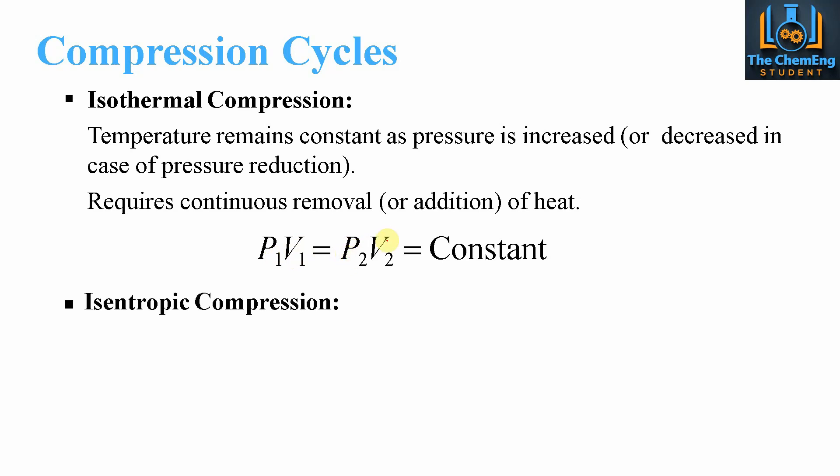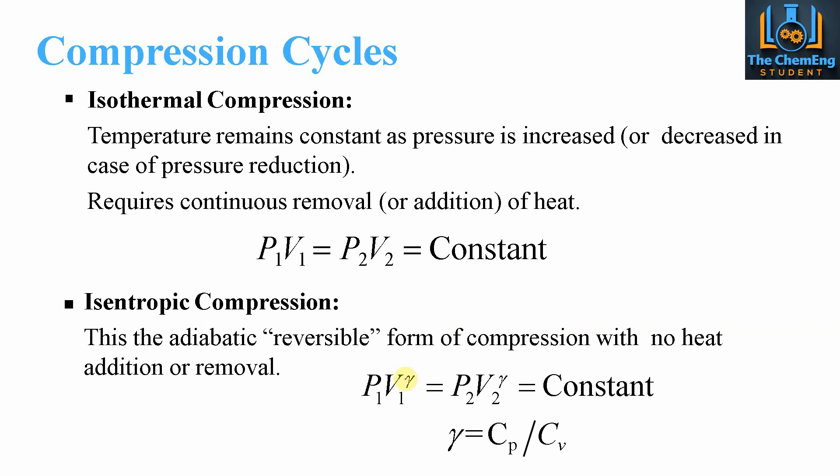Now the other type of compression is known as isentropic. Now isentropic compression is the adiabatic or reversible form of the compression with no addition of heat or removal. So it follows the same principle, but because we don't have the addition or removal of heat and the system is reversible, we then introduce this new parameter gamma. So we have P1V1 is equal to P2V2, but the volumes are to the power gamma. Now gamma is expressed as CP over CV, so it's the relationships between the specific heat capacities. Now this is of course dependent on your fluid. So gamma can be found through published data for the values of CP and CV.